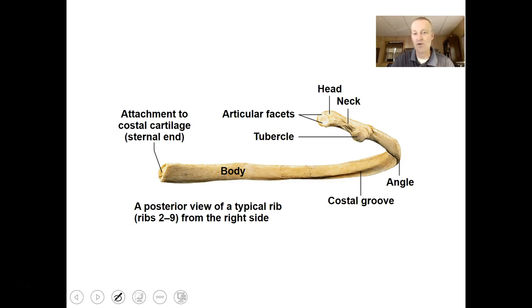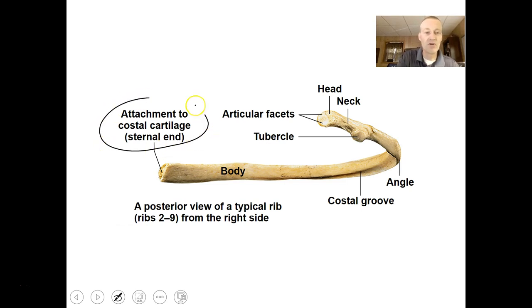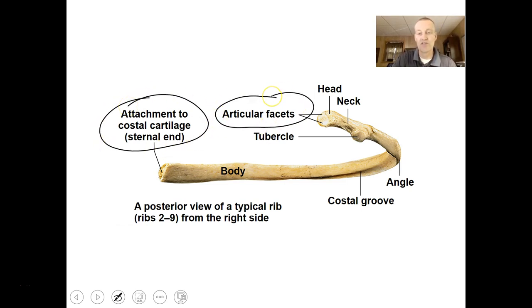Looking at a single rib, you just need to know it generically as a rib. There is a connecting part that connects into the sternum, and articular facets to connect it into the vertebrae.